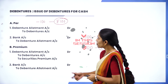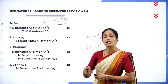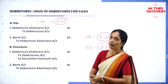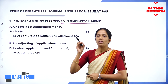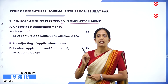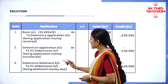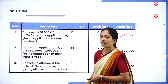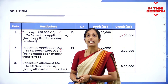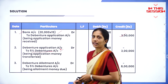Debentures can be issued at par, which means if the debenture value is 100 rupees, it is issued at exactly 100 rupees — that is termed as par. Under debenture problems, the rate of interest will be mentioned and must be included. The debenture application account is transferred to the debentures account, unlike shares where it is transferred to share capital.